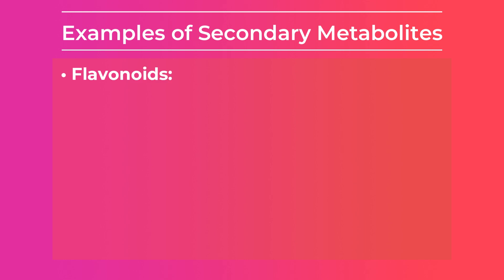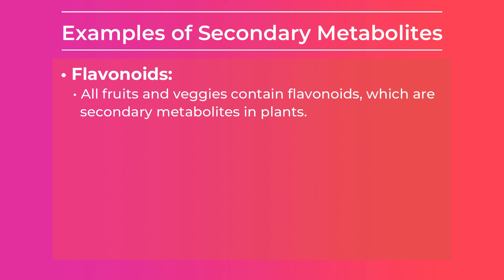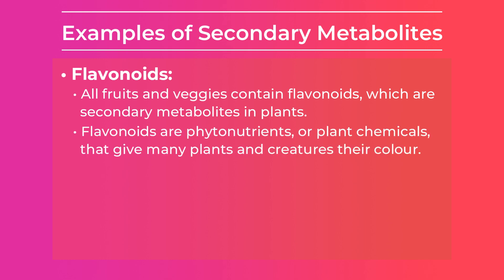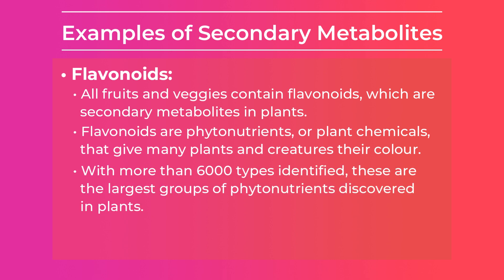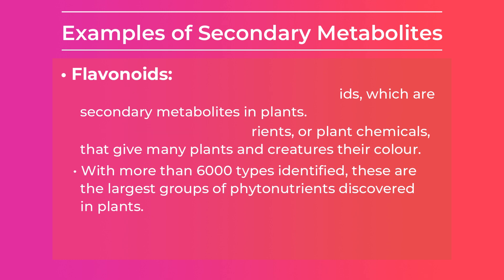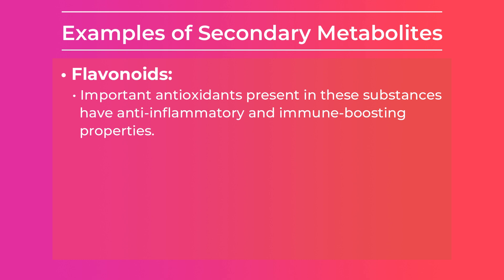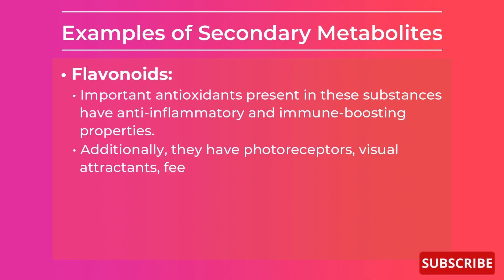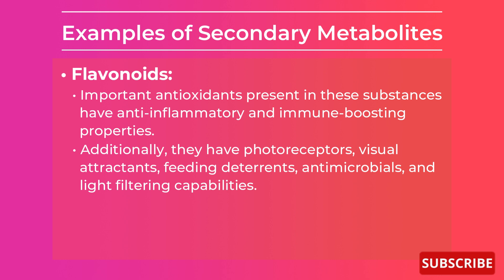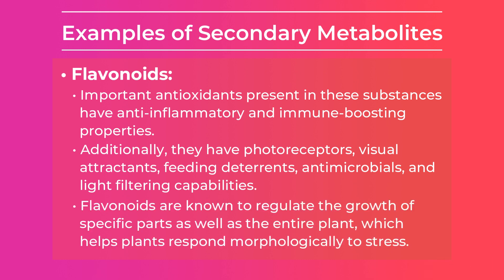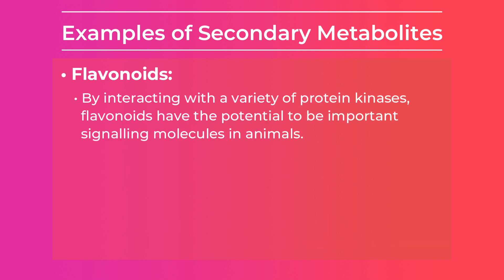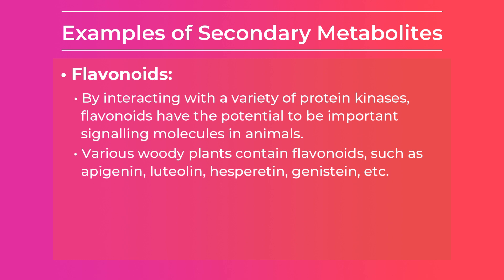Next is flavonoids. All fruits and vegetables contain flavonoids, which are secondary metabolites in plants. Flavonoids and phytonutrients are plant chemicals that give many plants and creatures their color, with more than 6,000 types identified — the largest group of phytonutrients discovered in plants. They are important antioxidants with anti-inflammatory and immune-boosting properties. Additionally, they have roles as photoreceptors, attractants, feeding deterrents, antimicrobials, and light-filtering agents. Flavonoids regulate the growth of specific parts as well as the entire plant, helping plants respond morphologically to stress by interacting with various protein kinases, and have potential as important signaling molecules in animals. Various woody plants contain flavonoids such as apigenin, diosmetin, hesperitin, naringenin, and others.